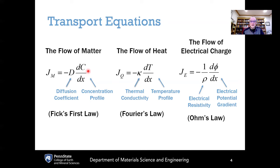The other transport equations have exactly the same form — it's just a different type of species flowing. For the flow of heat, we have Fourier's law: the heat flux J_q equals minus the thermal conductivity times the thermal gradient dT/dx. Likewise for the flow of electrical charge: J_e equals minus the electrical conductivity — one over the electrical resistivity ρ — times the electrical potential gradient. This is Ohm's law. Fourier's law and Fick's law all have identical mathematical forms and are solved in exactly the same fashion.